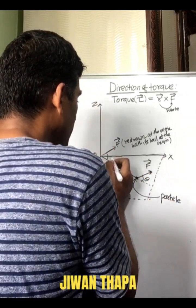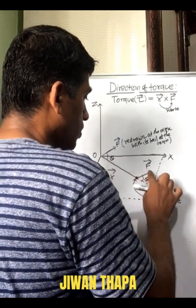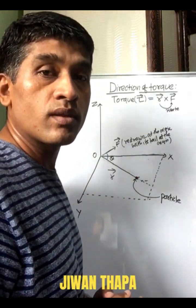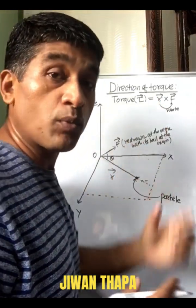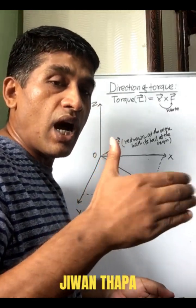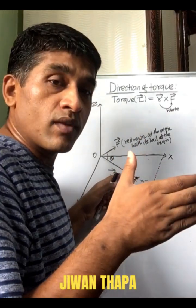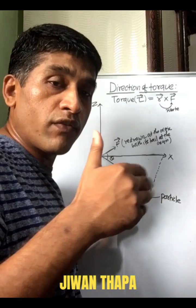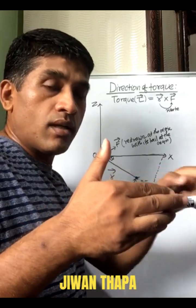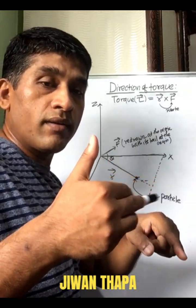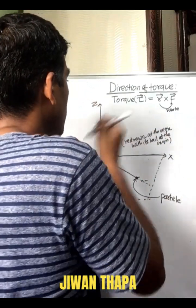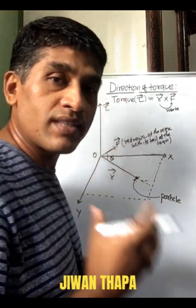Now, in order to find the direction of torque, we use the right-hand rule. We rotate the first vector — that is the position vector r — towards the second vector, that is force F. If you curl the fingers of the right hand from r towards F, the stretched thumb gives the direction of torque. In this case, the direction of torque is along the positive z-axis.